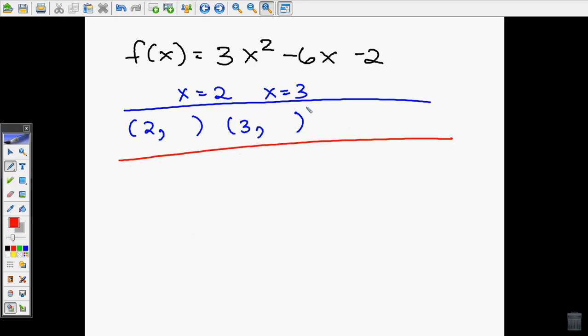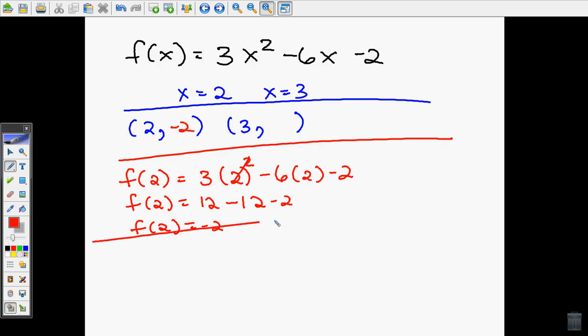To do that, I'm going to have to plug them in. I'm going to find out what f of 2 is, and that is 3 times 2 squared minus 6 times 2 minus 2. I'm just replacing all of these with 2 so that I can figure out what my y is. So f of 2 is 4 times 3 is 12, minus 12 minus 2, which means f of 2 is negative 2.